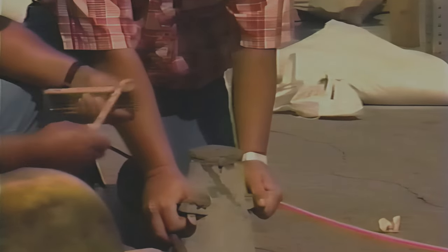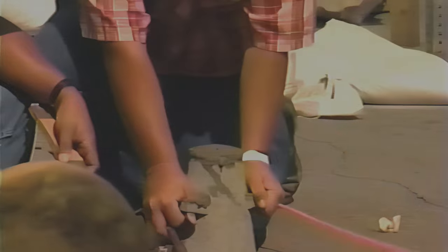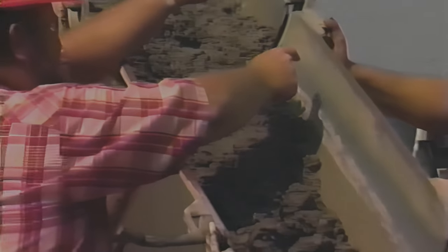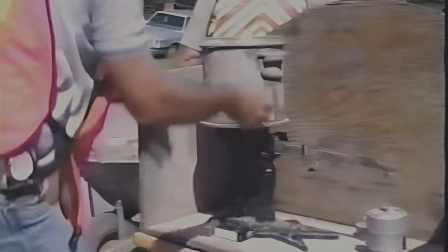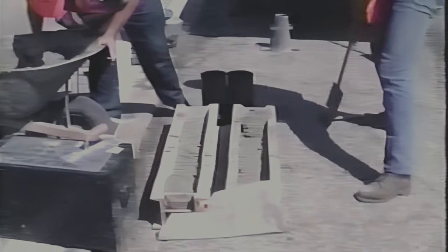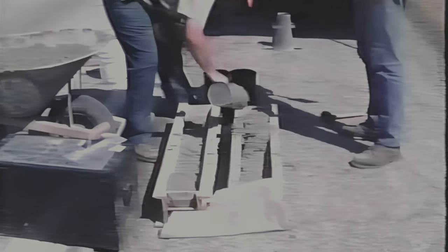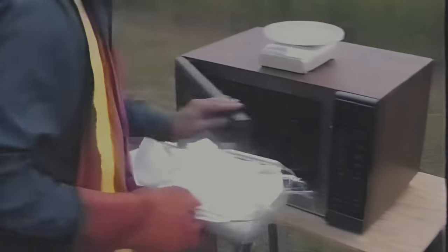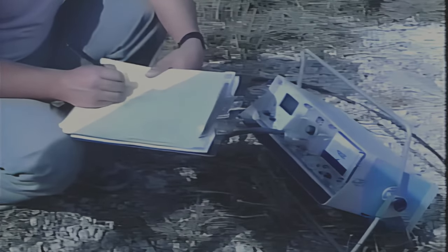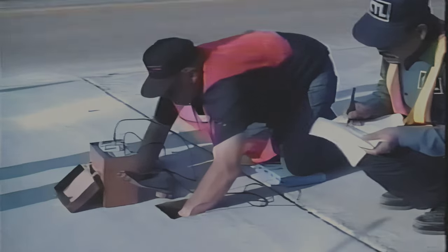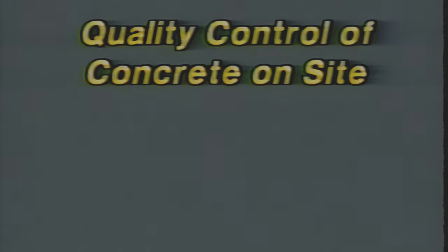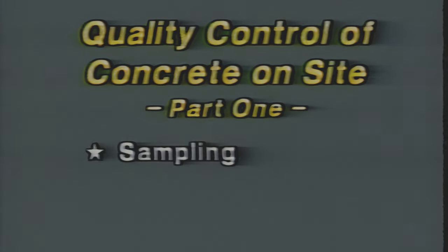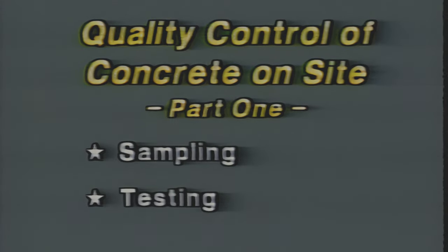Verification is provided by conventional control tests performed in the field. This presentation is the first of four videotapes on quality control of concrete on site. Here in part one, and in part two, are presented the conventional control tests for determining concrete quality at the job site. In parts three and four, you'll see new quality control procedures developed by Sharp and others for testing concrete both before and after it's cast. Here in part one, we'll look at sampling concrete and at the test methods for temperature and slump.